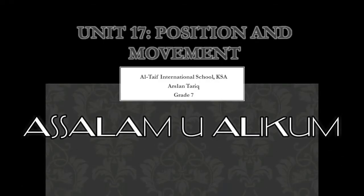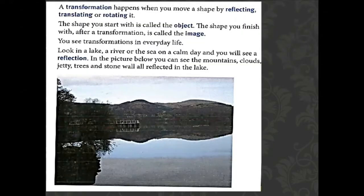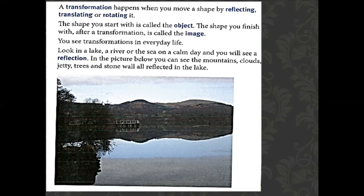Today our topic is Unit 17: Position and Movement — Transformations. What is transformation? Transformation happens when you move a shape by reflecting, translating, and rotating it. The shape you start with is called the object, and the shape you finish with after transformation is called the image. For example, this mountain shape here is the object, and when you reflect it, the result is called the image.